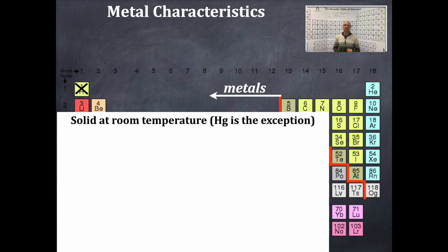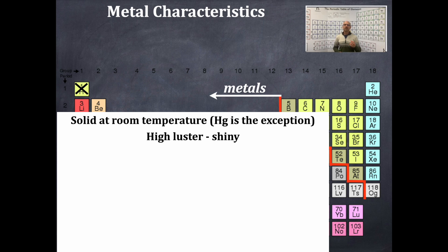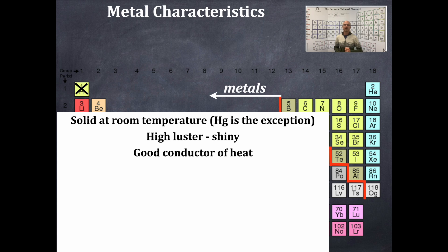What are the characteristics of metals? Number one, they are solid at room temperature and pressure — mercury is the only exception, being a liquid. Metals have high luster — they are shiny and can be polished. Metals are good conductors of heat: they are cold in winter and hot in summer and transfer that energy. Touch a car hood made of metal in winter — it will be very cold; in summer, very hot.